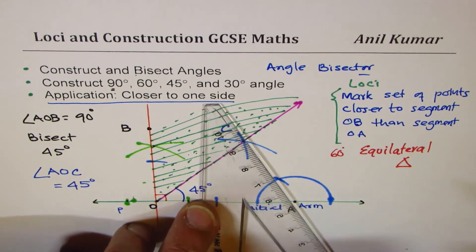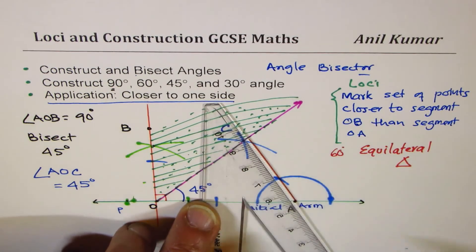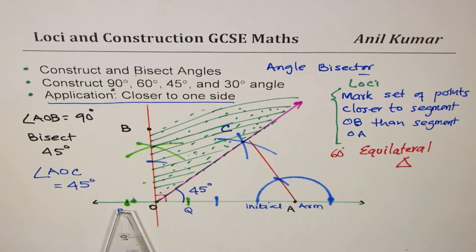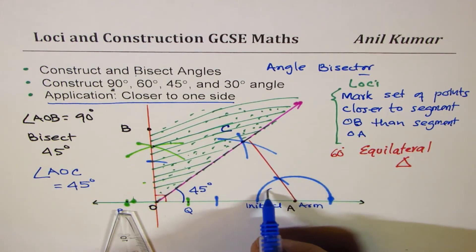So if I now connect the point A, I will get an angle which is 60 degrees. That is how you get 60 degrees angle.